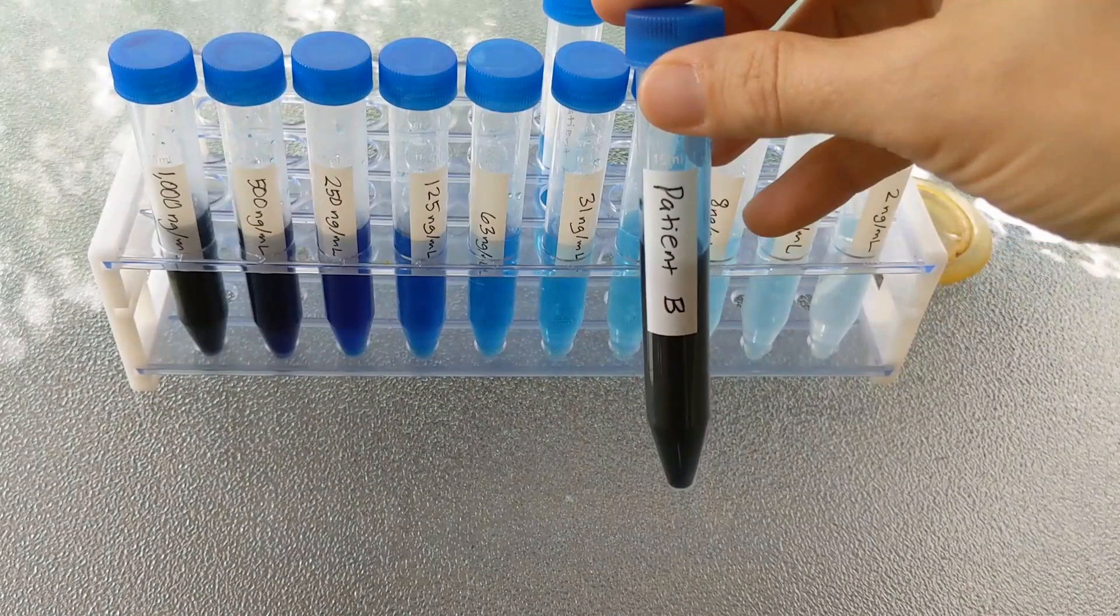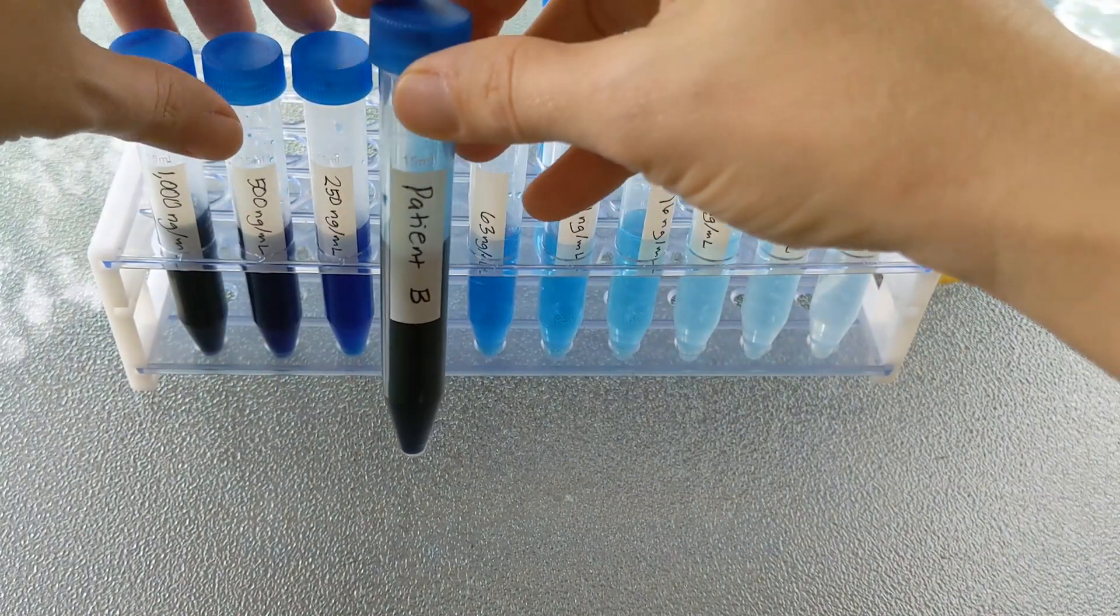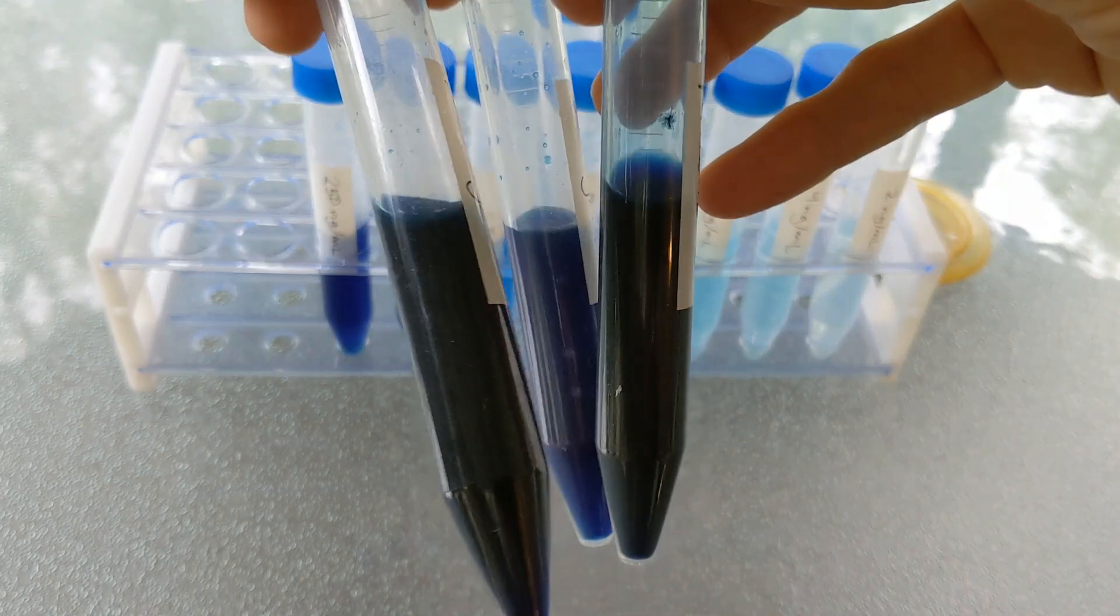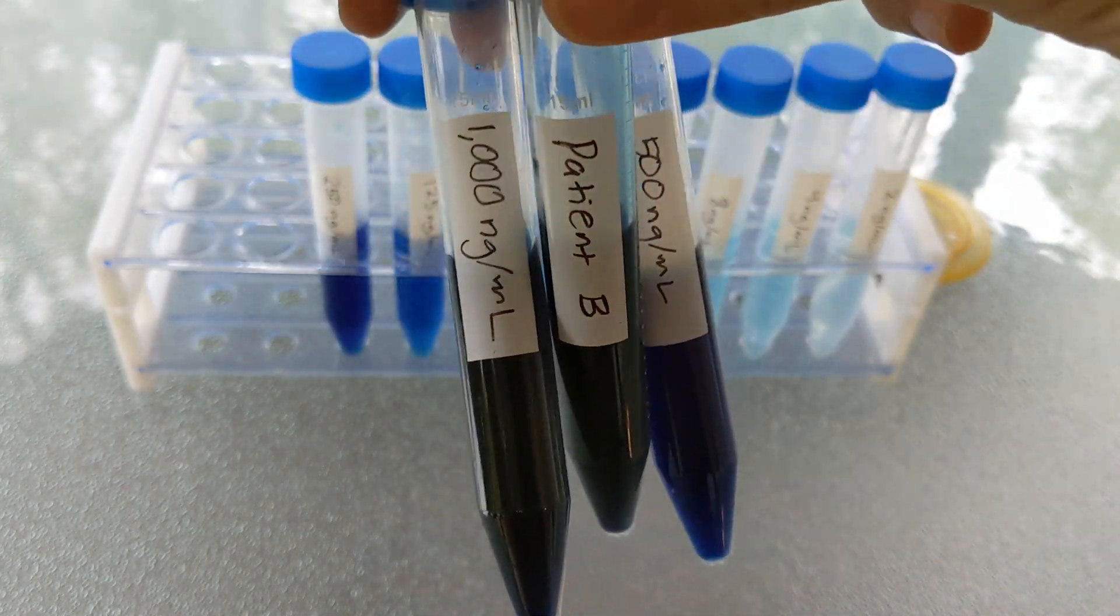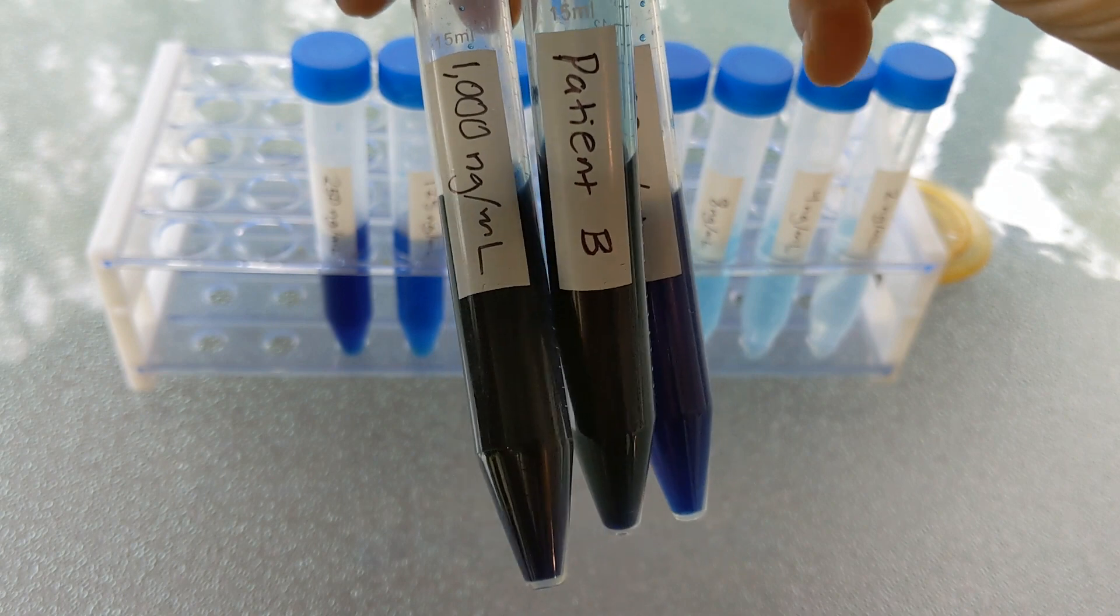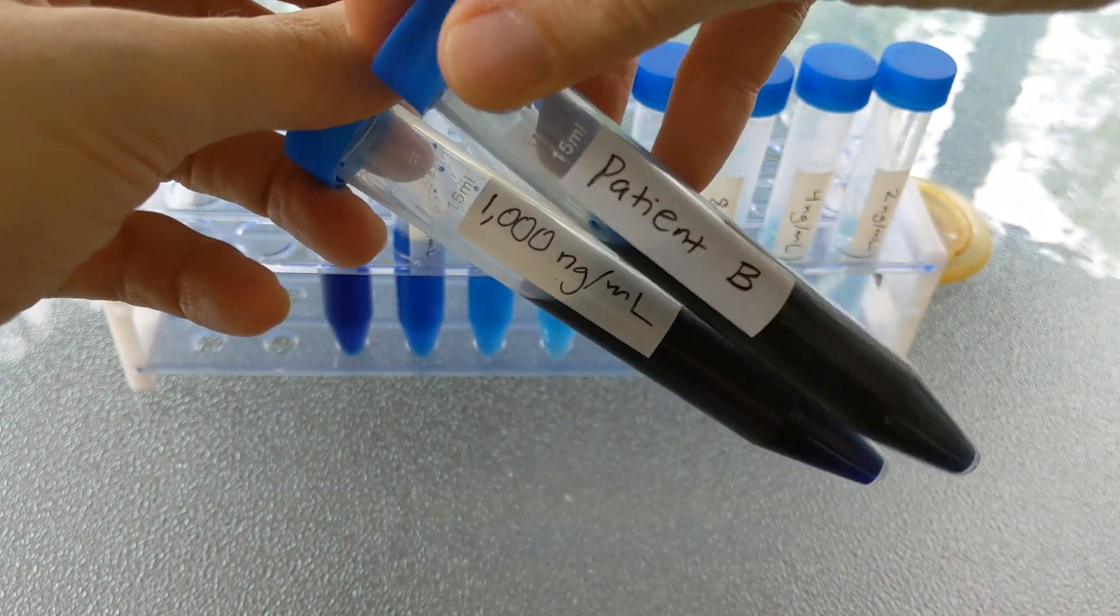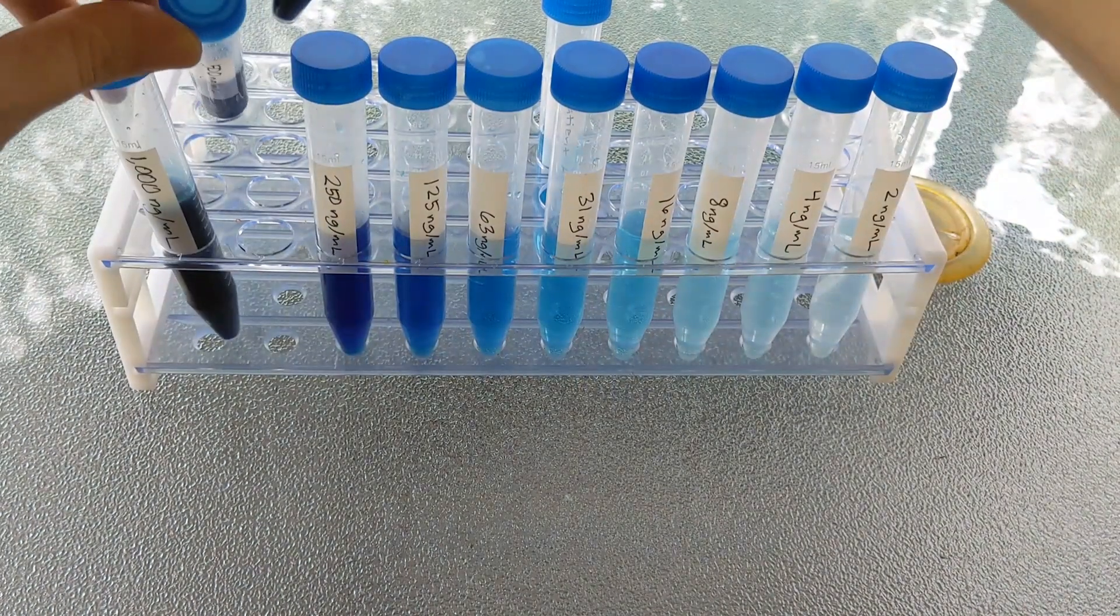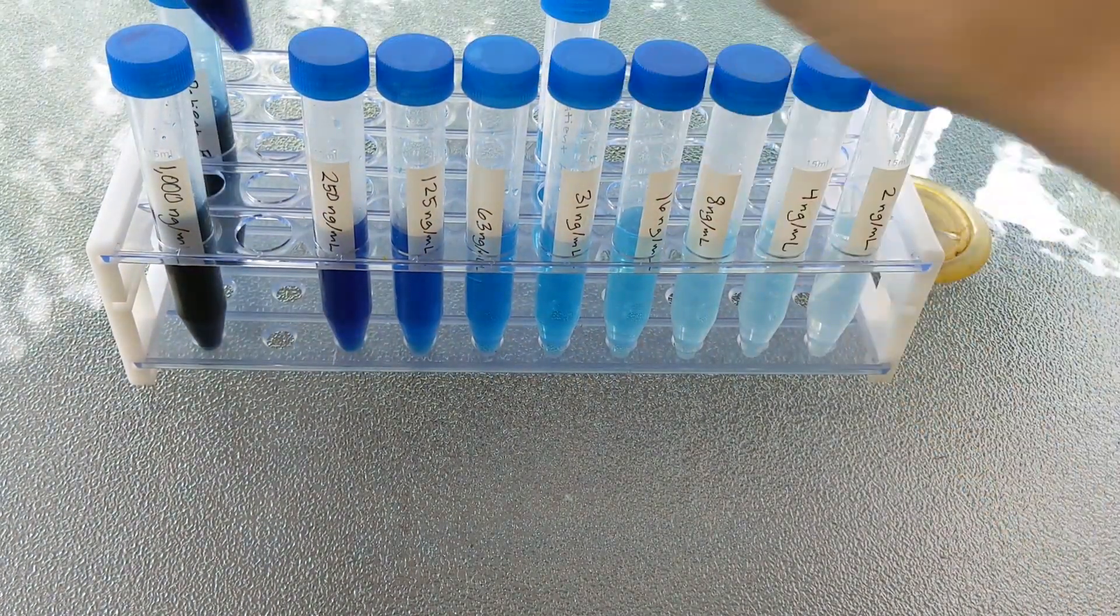And then I have another one to test out. So this is patient B, clearly very dark, very infected patient, but how dark and infected? I think it's more of a match for this first tube. So I'm going to call patient B 1,000 nanograms per milliliter. And I'm going to put that patient right there.